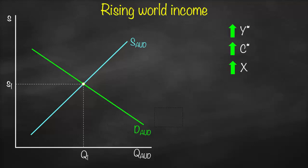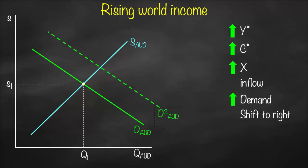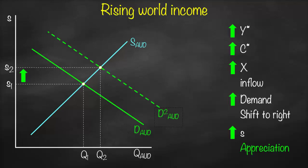Since Australia is a neighbor of China, this means we will export more to China. Exports — noted without a star because it refers to Australia — will be higher. Remember that exports are an inflow. Higher exports means higher inflow, which affects demand. Higher demand means a shift to the right, so we shift the demand curve for Australian dollars to the right, labeled D2. Chinese buyers want to purchase Australian dollars in order to buy more goods and services. Looking at the new equilibrium, the exchange rate increased. Using indirect quotation, this means Australian dollar appreciation.